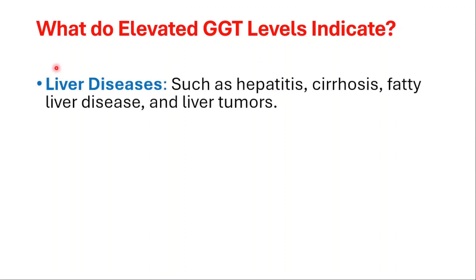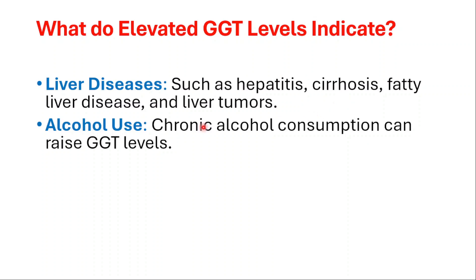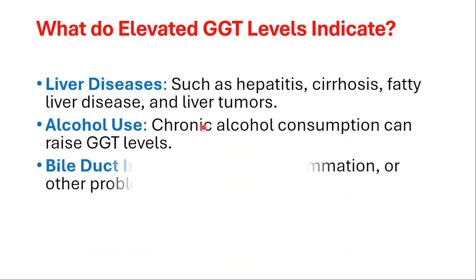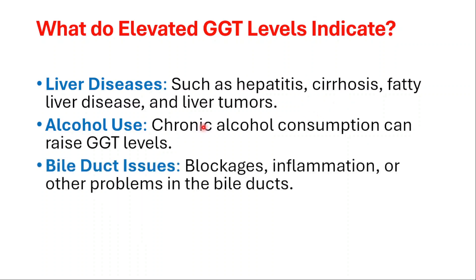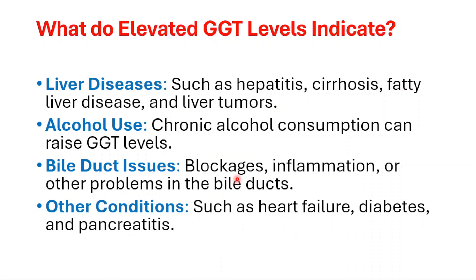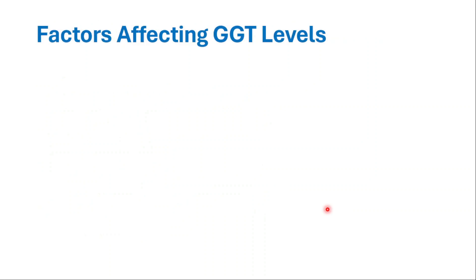What do elevated GGT levels indicate? It could be elevated in liver diseases like hepatitis, cirrhosis, fatty liver disease, and liver tumors. Chronic alcohol consumption can also raise GGT levels. Blockages, inflammation, or other problems in the bile ducts can lead to elevated GGT, and heart failure, diabetes, and pancreatitis may also cause elevated GGT levels.